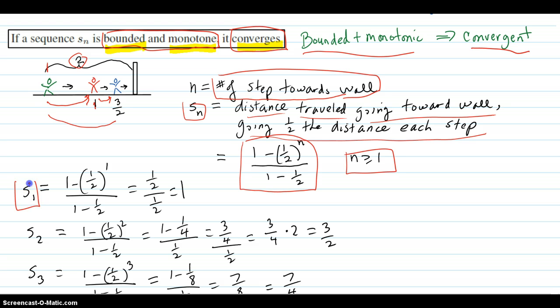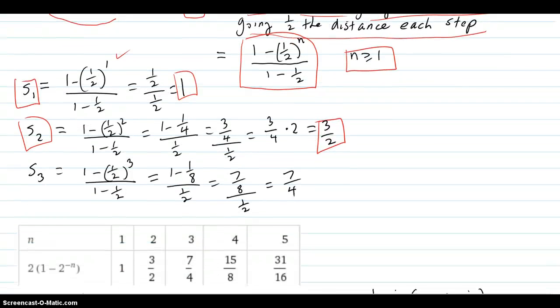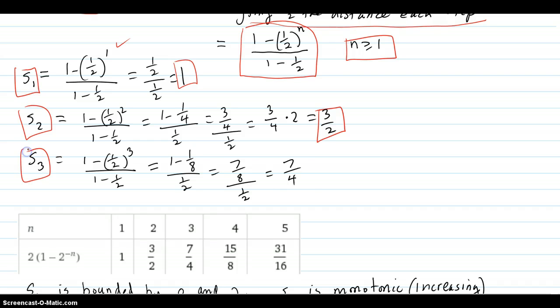So for example, your first step, you have gone one foot by doing this calculation. Your second step, by doing the calculations, sure enough it ends up that you've gone three halves. Next step, third step you take, you've now gone seven fourths.